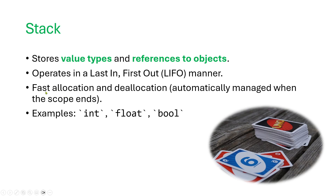Some traits of the stack: there's very fast allocation and deallocation — when I assign something to a variable and when I'm done with it, that process is very quick. It's automatically managed by the computer whenever the scope of your variable ends. Whenever the variable dies because a method is over, the deallocation of that resource in RAM happens by itself. Examples of things on the stack would be ints, floats, booleans, and references to objects.